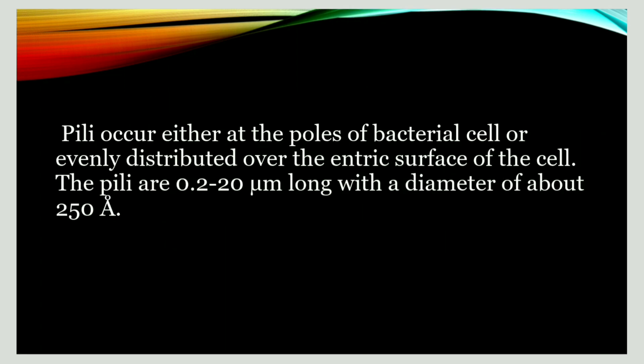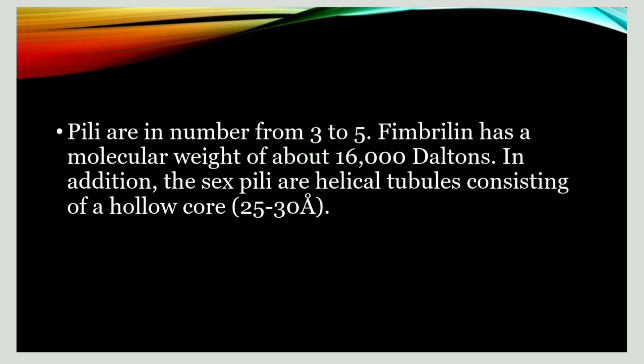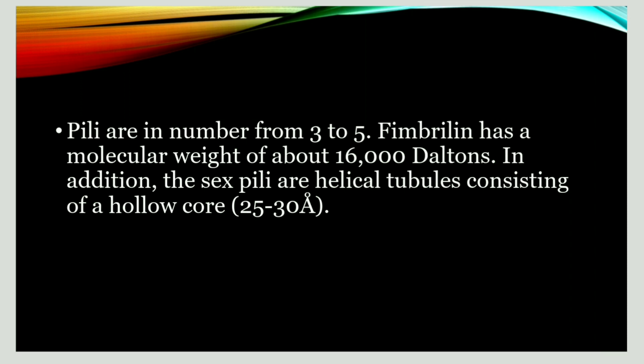Pili occur either on the poles of a bacterium or are evenly distributed around the surface of the cell. Pili are 0.2 to 20 micrometers long and about 250 Angstroms in diameter. The number of fimbriae can reach up to 1000, while pili are usually only 3 to 5 per cell. The molecular weight of a fimbria is up to 16,000 Daltons.